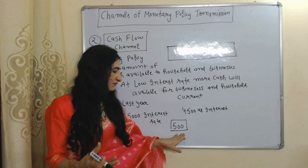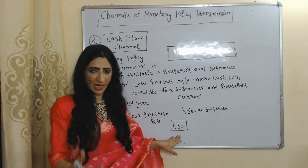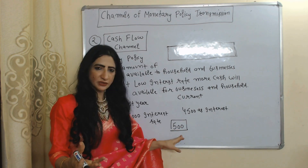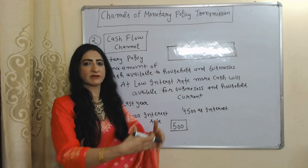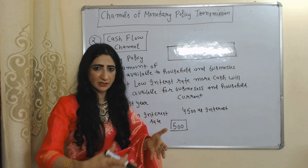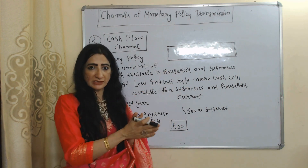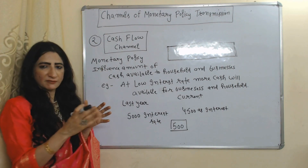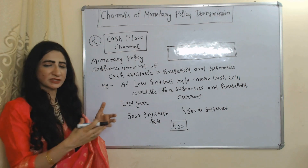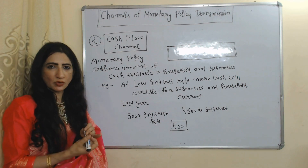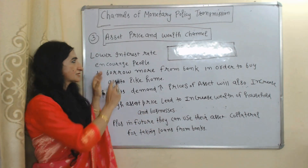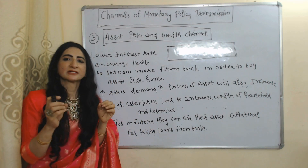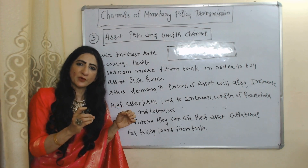This 500 rupees means you now have more availability of cash. You can use this 500 rupees for investment purposes, or you can buy some goods and services. So by this way, monetary policy influences the availability of cash for households and businesses.